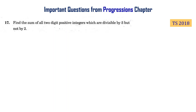Find the sum of all 2-digit positive integers which are divisible by 3 but not by 2. This is a Telangana final exam 2018 question. This type of question is very important and comes up frequently. Let's understand how to solve this problem.